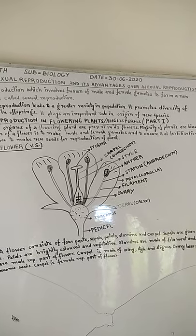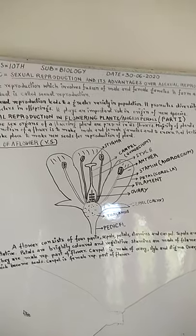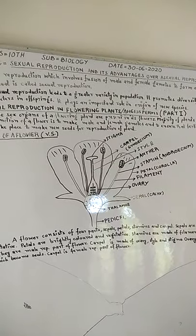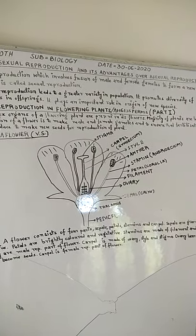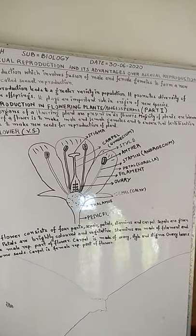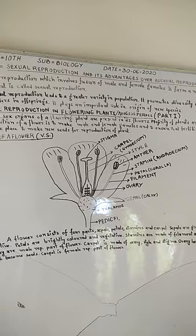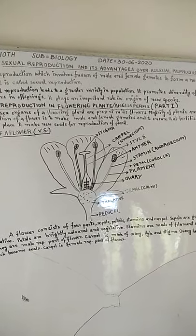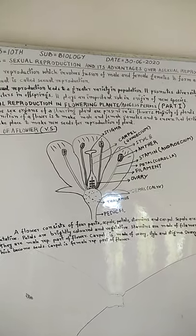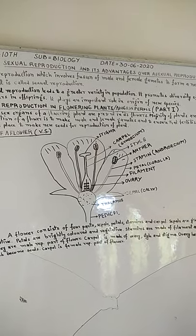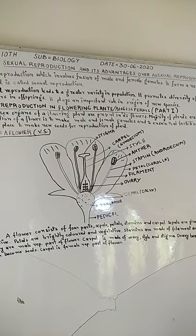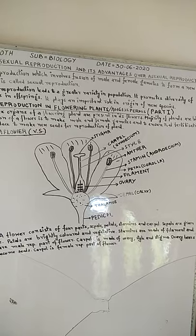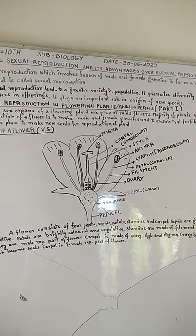A flower consists of four parts: sepals, petals, stamens, and carpel. Sepals are green and vegetative, while petals are brightly colored and they are also vegetative.